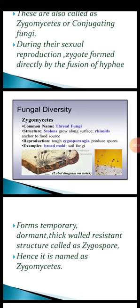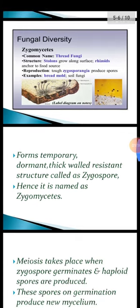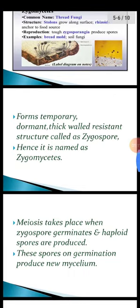Zygospores are produced in structures called zygosporangia. Rhizopus is called black bread mold because black spores appear on spoiled bread. They form a temporary dormant, or resting state, with thick-walled resistant structures called zygospores — hence they are named Zygomycetes.